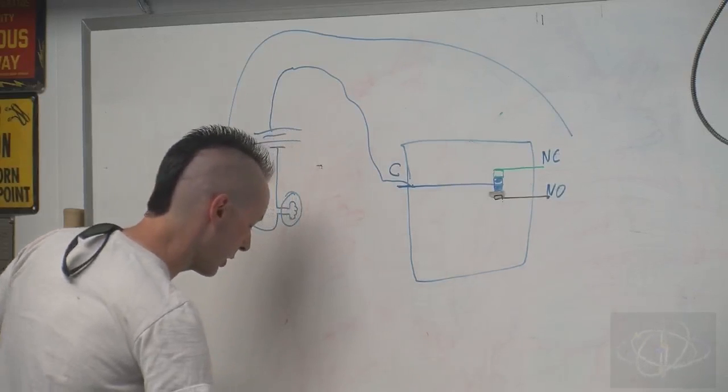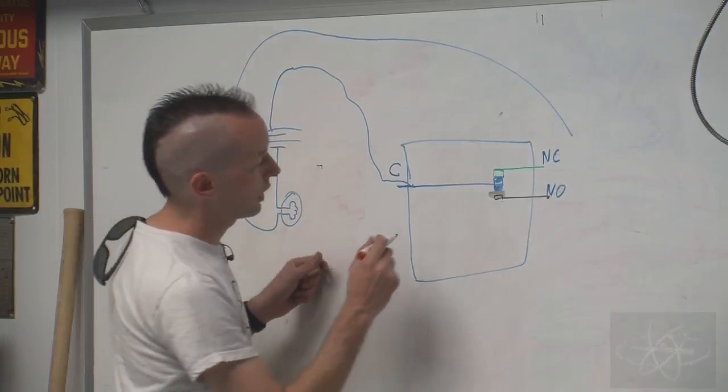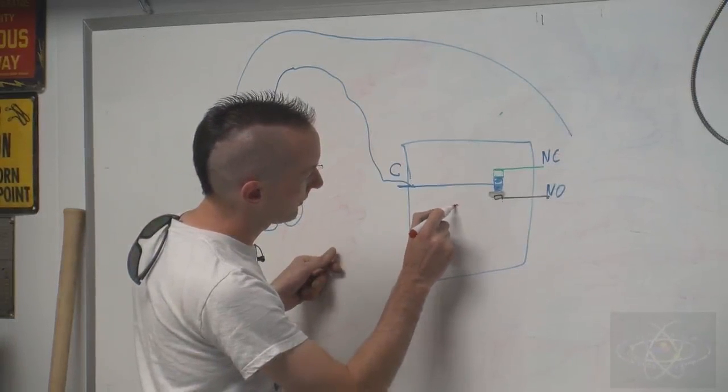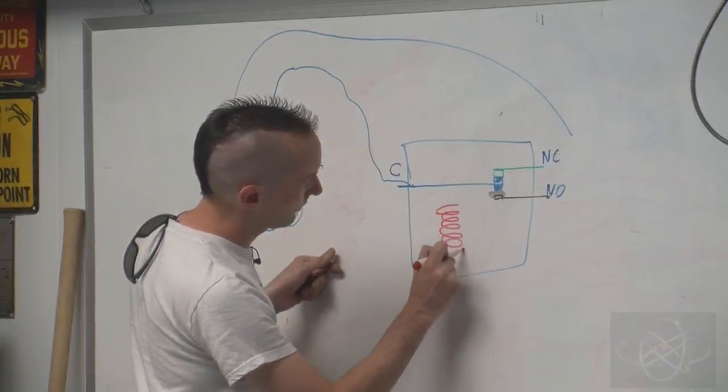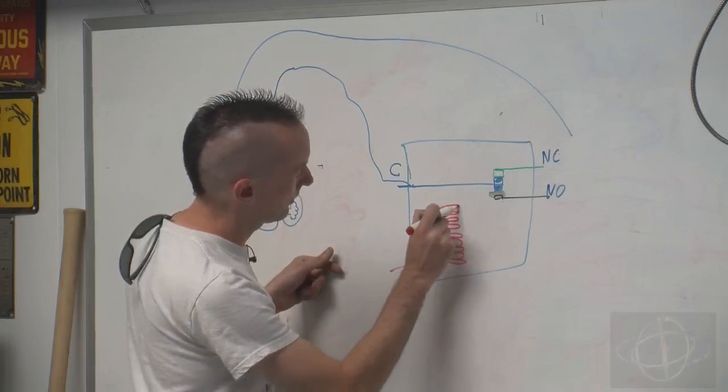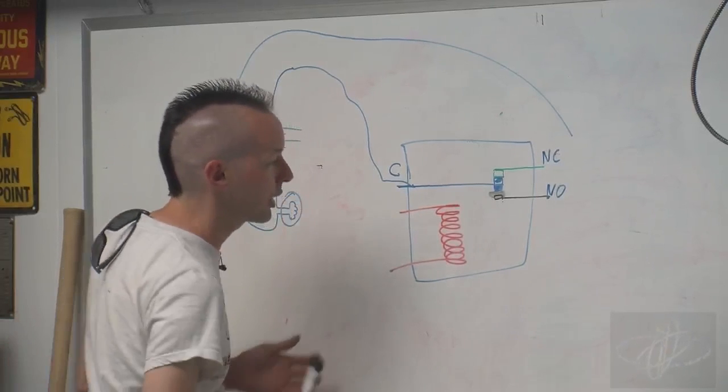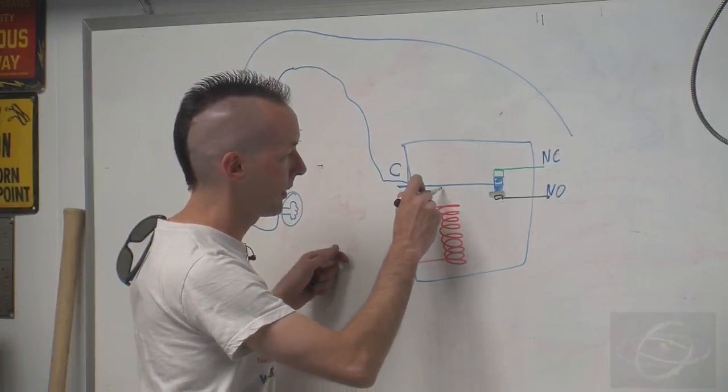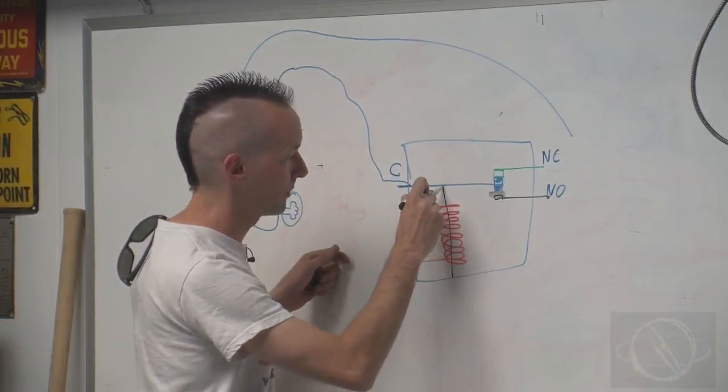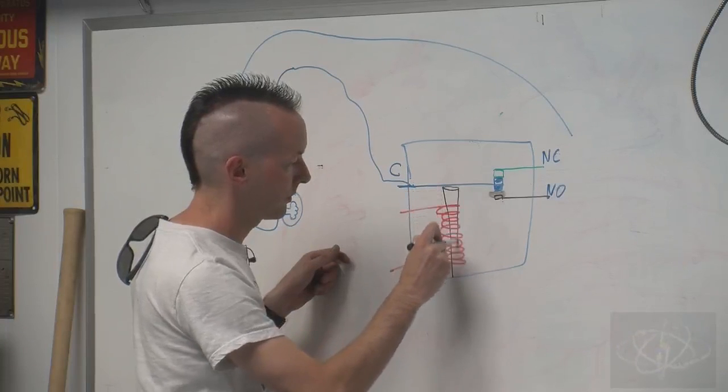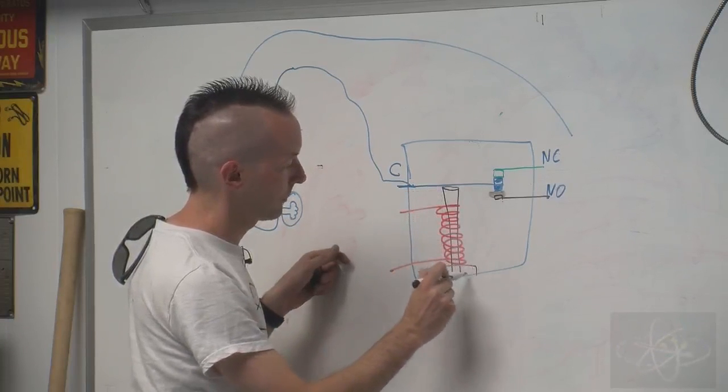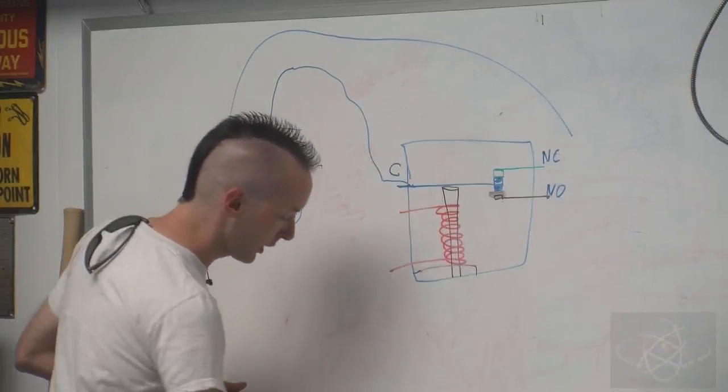Now, inside there we have a coil. And the coil is set up on a form, which is usually just a pin, and it sits on a base plate. So there's your basic ice cube relay.